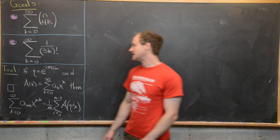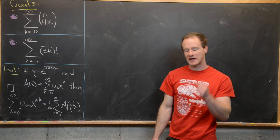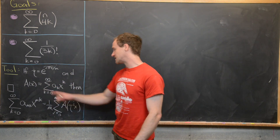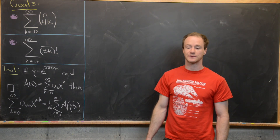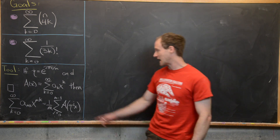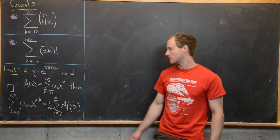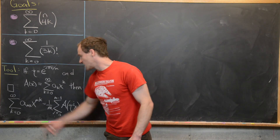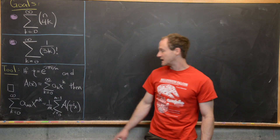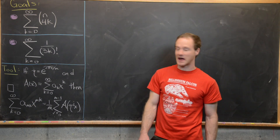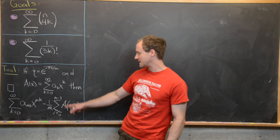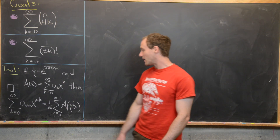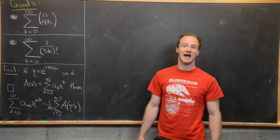So if you have η equal to e to the 2πi over m — in other words, it's a primitive m-th root of unity — and a(x) equals the sum as k goes from 0 to infinity of a_k x to the k, i.e., it's the generating function for the sequence a_k, then the sum as k goes from 0 to infinity of a_{mk} x to the mk equals 1 over m times the sum as j goes from 0 to m minus 1 of a evaluated at η^j times x.